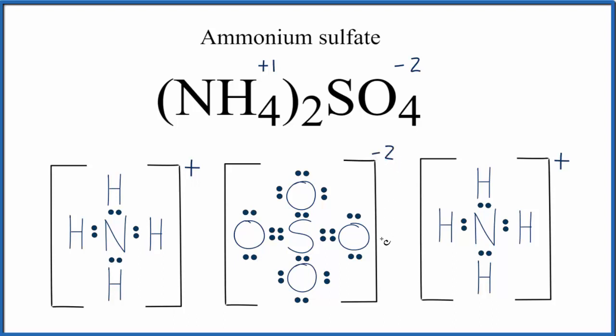So, that makes this the Lewis structure for ammonium sulfate, (NH4)2SO4. You can see we have our two NH4 groups, and then our one sulfate, SO4.